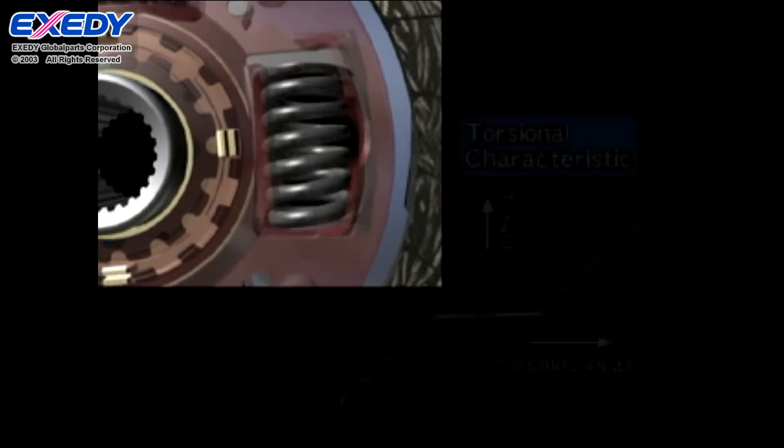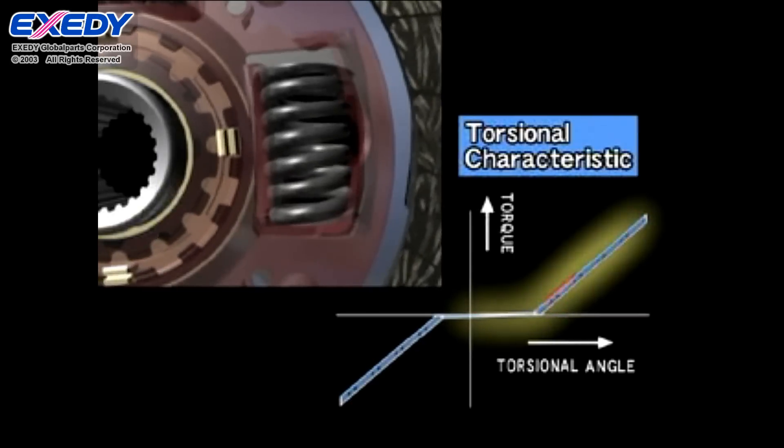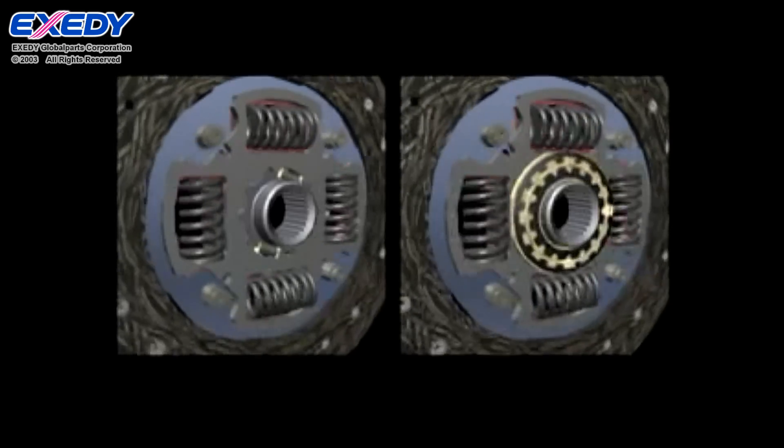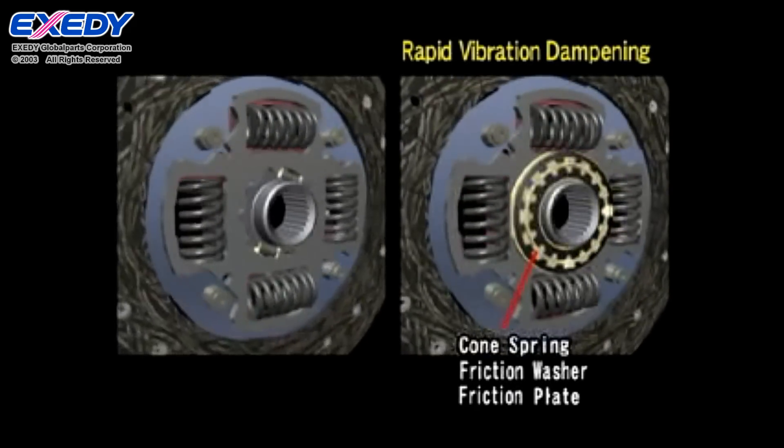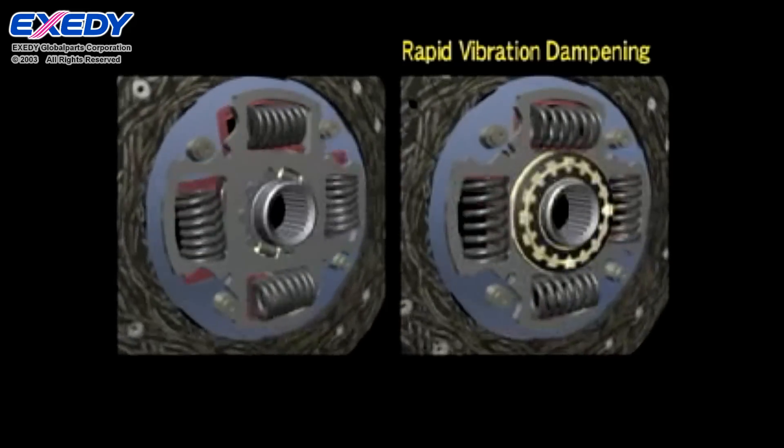The shock from engaging the clutch while accelerating is absorbed by torsion springs like this one. The cone springs, friction washers, and friction plate function to quickly stop the torsion springs from vibrating, reducing both noise and vibration.